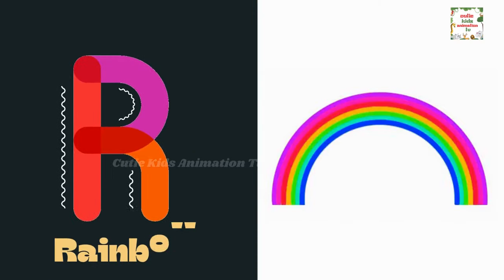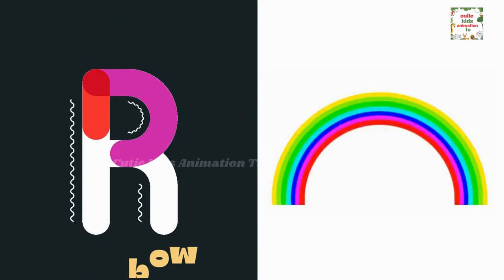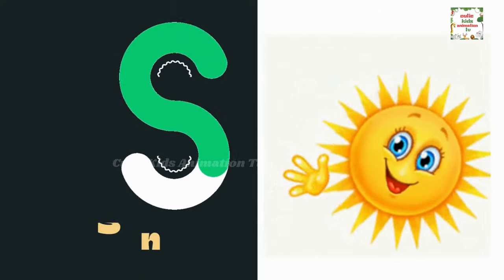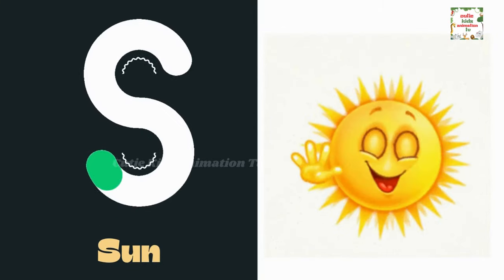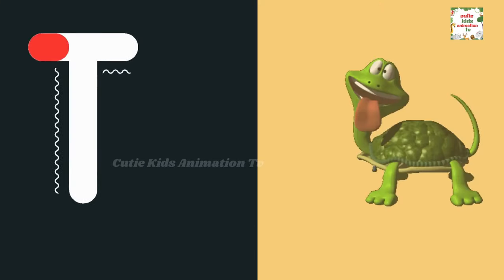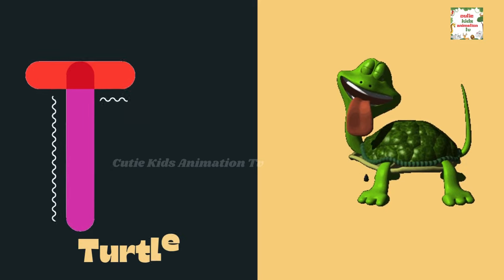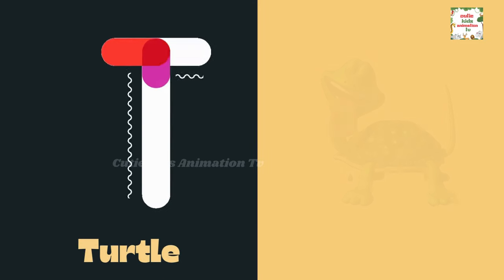R is for rainbow. R, a rainbow. S is for sun. S, S, sun. T is for turtle. T, T, turtle.